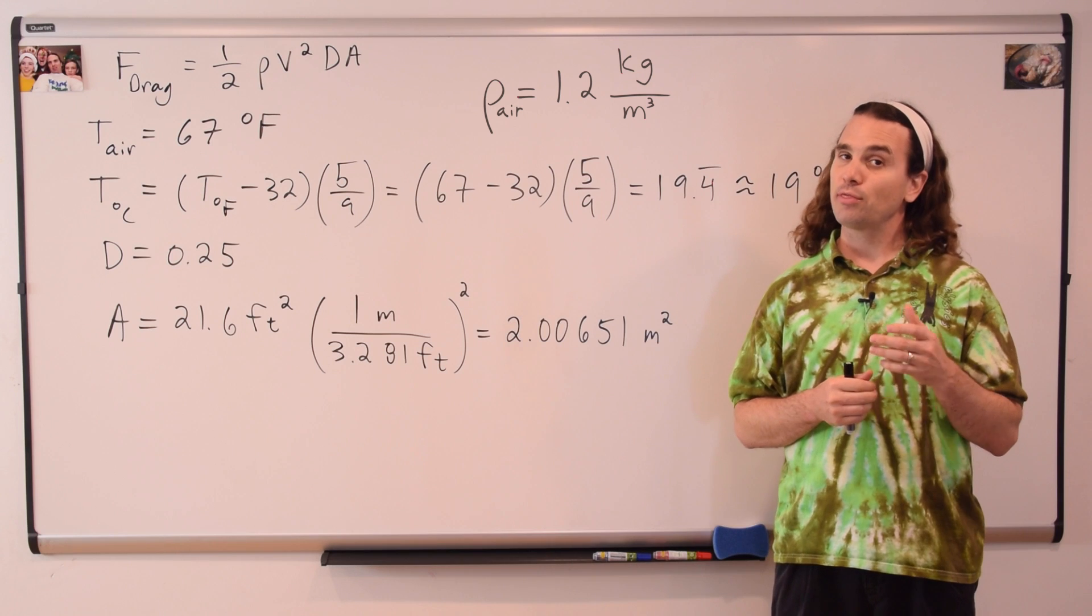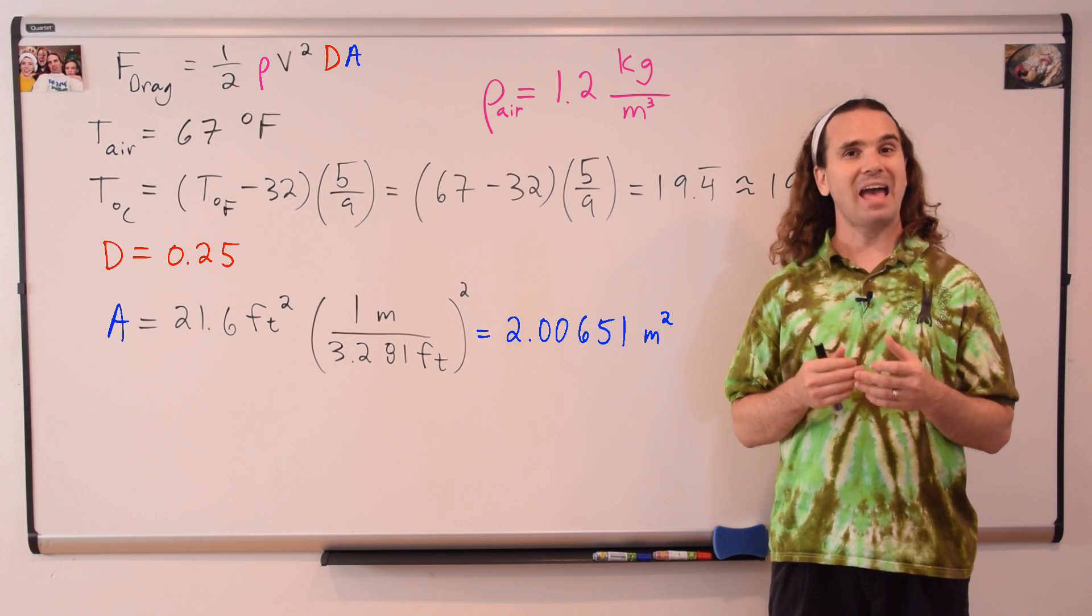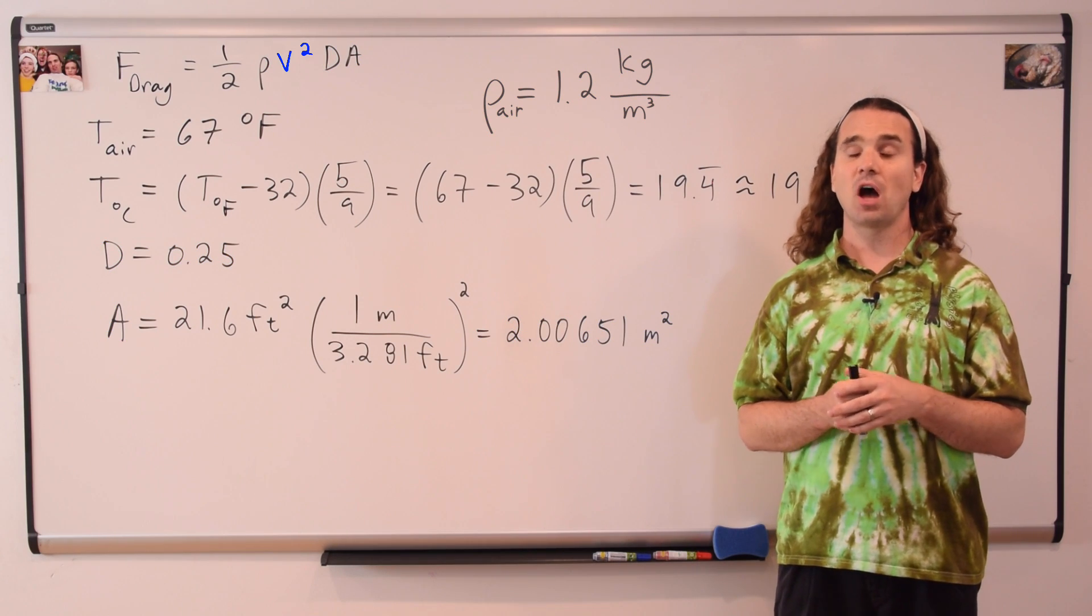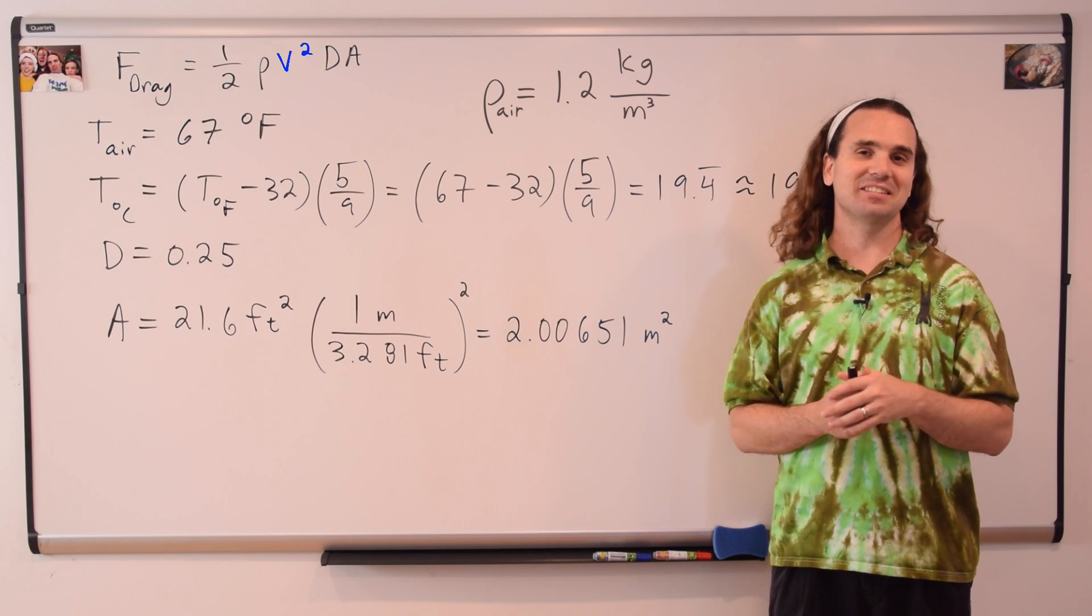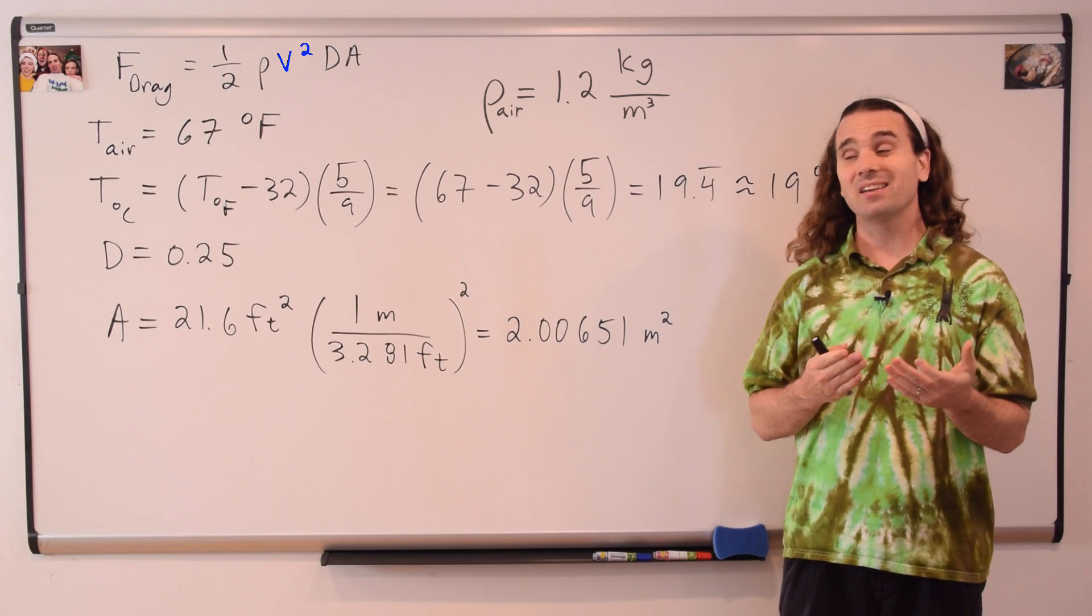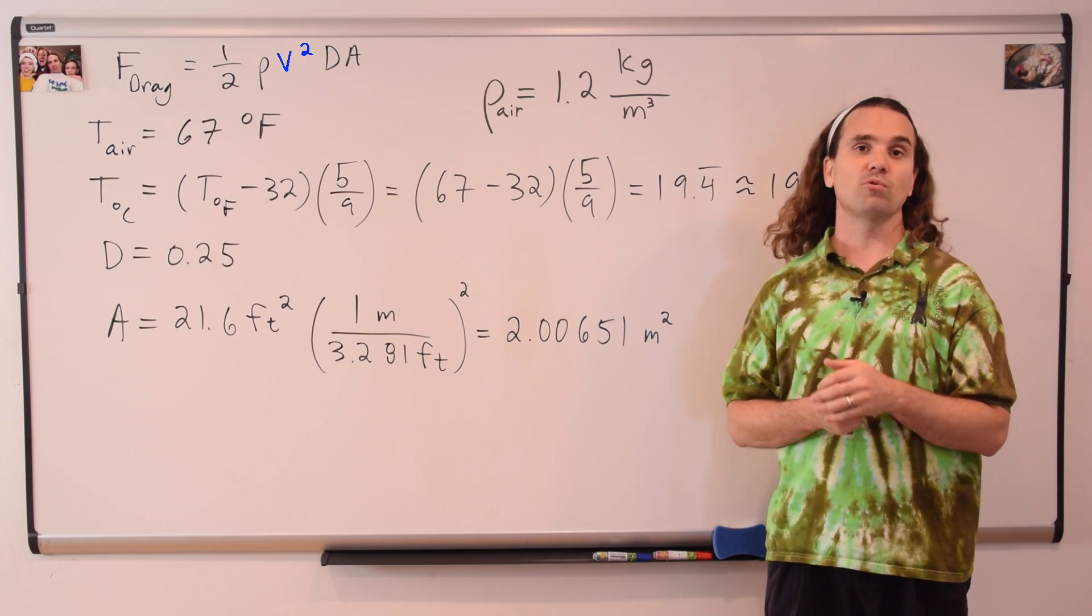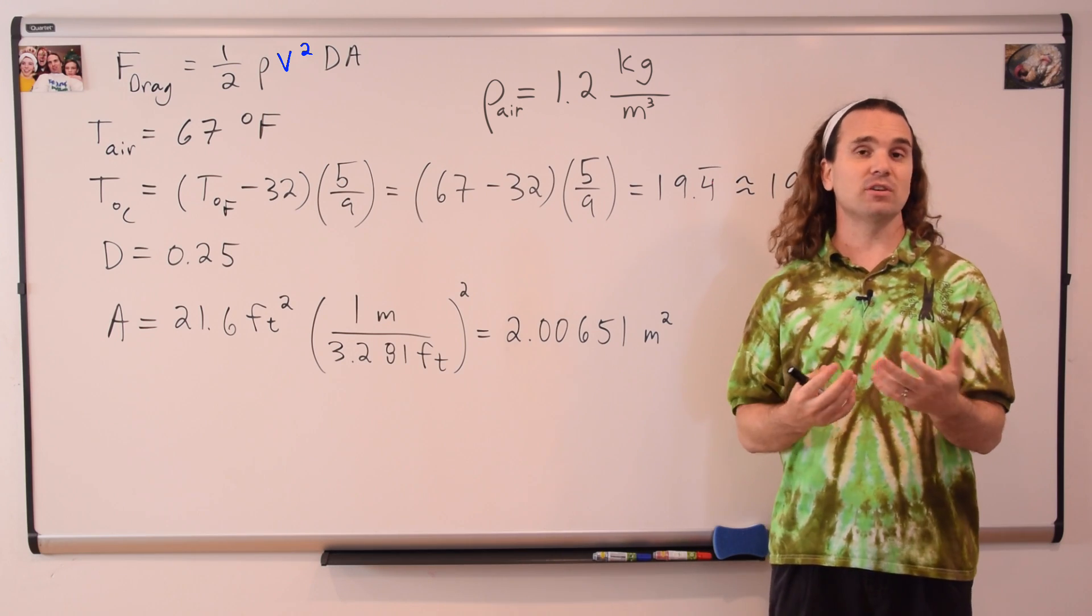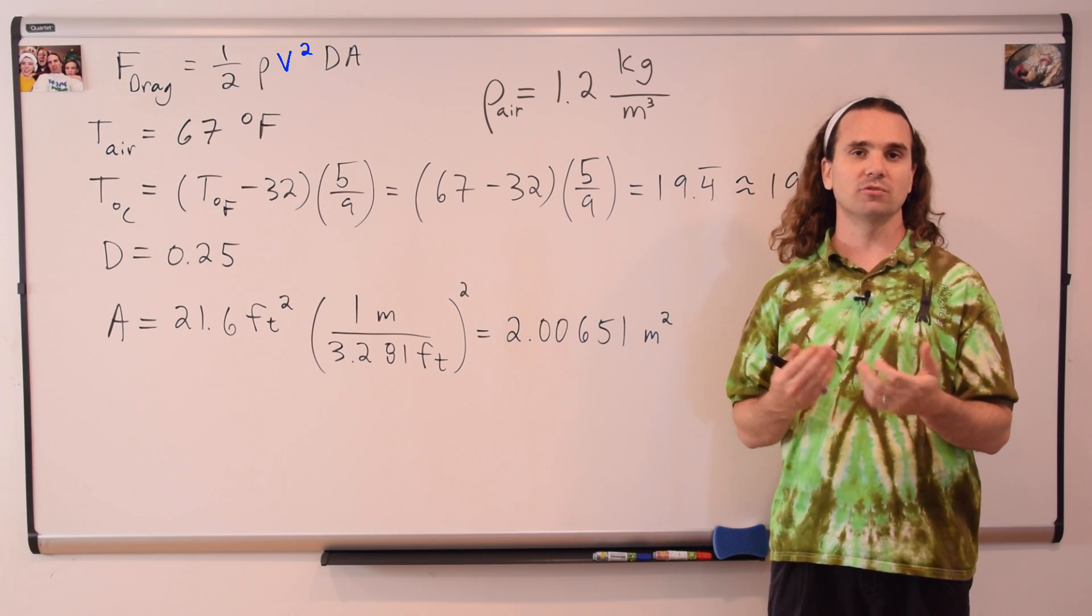Now, notice how all three of these variables are constant as the vehicle accelerates. However, the magnitude of the velocity is not constant as the vehicle accelerates, and the velocity is squared in the force of drag equation, which means we can't just use an average velocity to figure out the average force of drag.